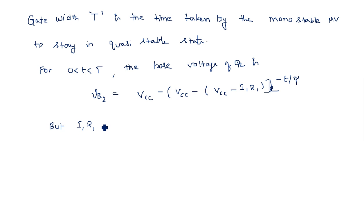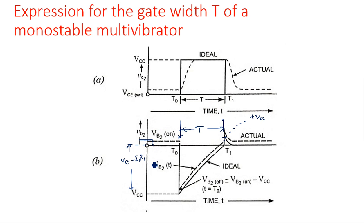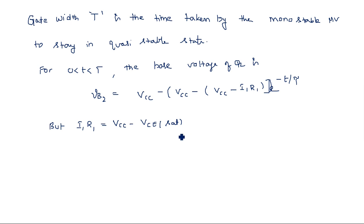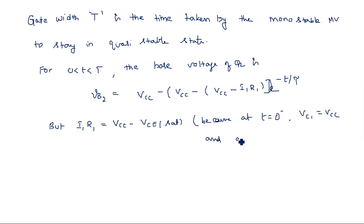Now, i1·R1 equals VCC minus VCE_sat. This is because just before t = 0, VCE1 equals VCC, and just after t = 0 (i.e., at t = 0+), VCE1 equals VCE_sat. So the initial voltage drop across R1 is VCC minus VCE_sat.